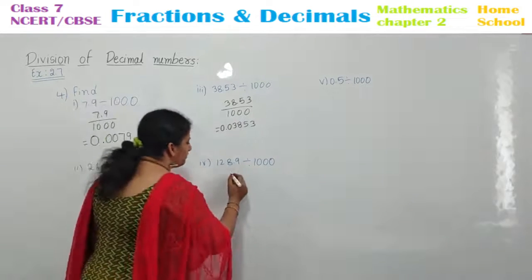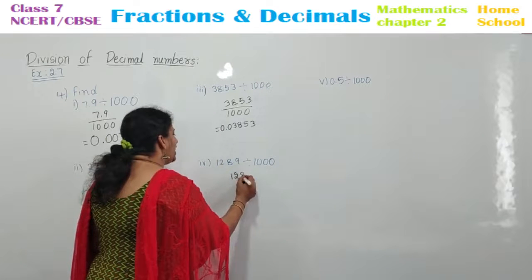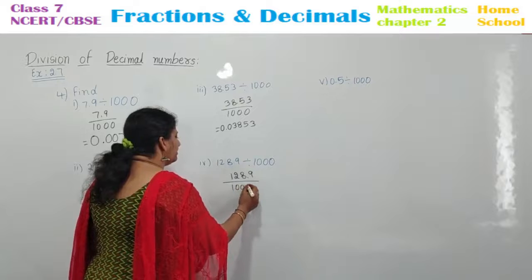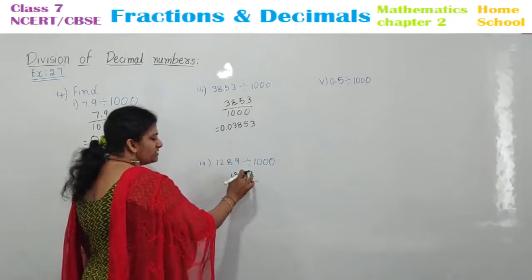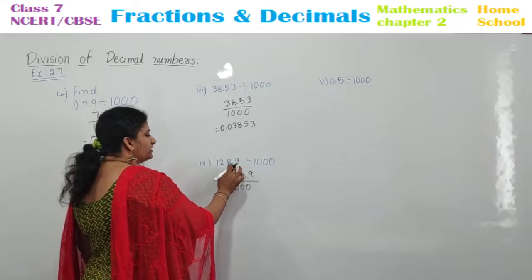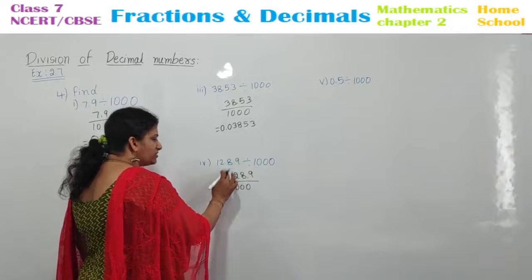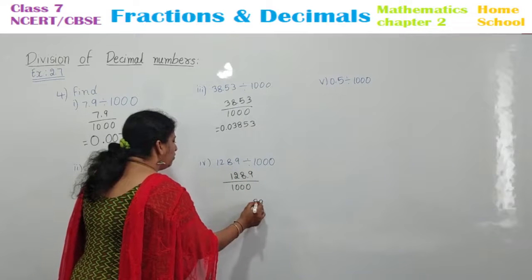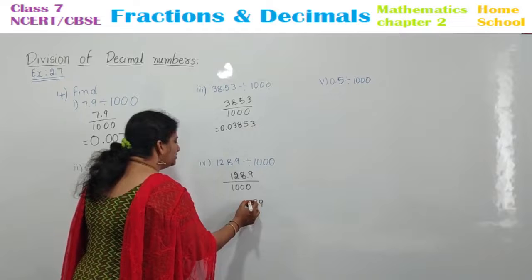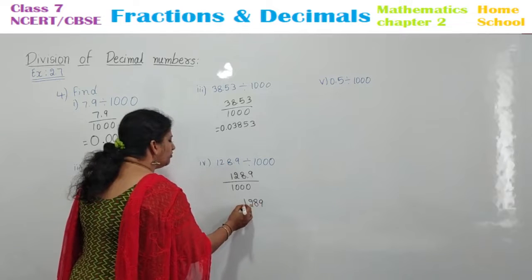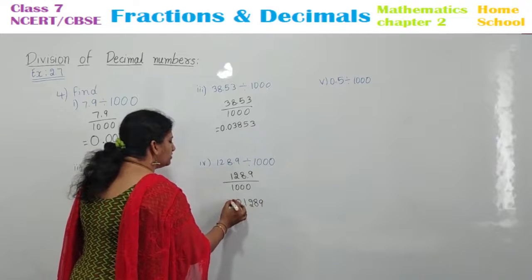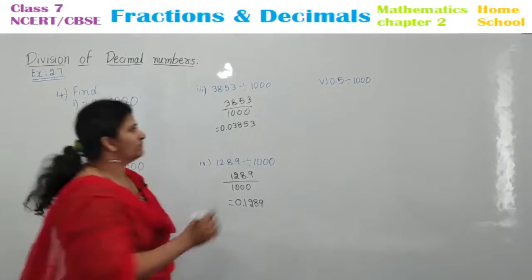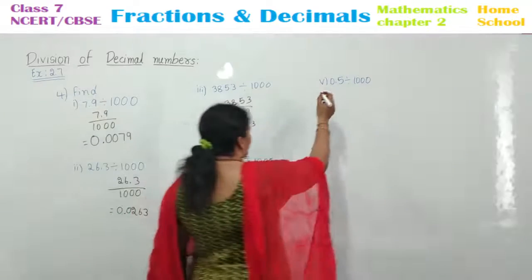Fourth one: 128.9 by 1000. Three zeros — this point should be shifted after three values. Count 9, 1, 2, 3 — put a point: 0.0. This is your answer. 0.1289 is your answer.